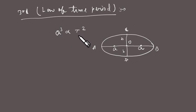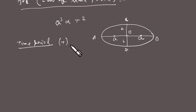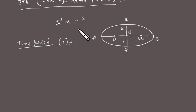So the cube of the semi-major axis is proportional to the square of the time period of revolution of the planets. The time period is the time taken by a planet to complete one full revolution around the Sun — that is, starting from a point and returning to the same point.